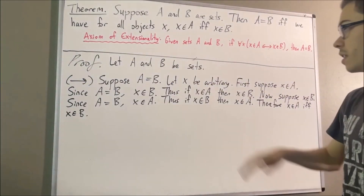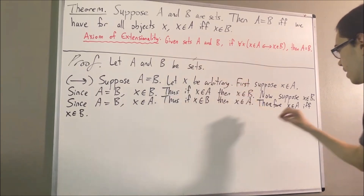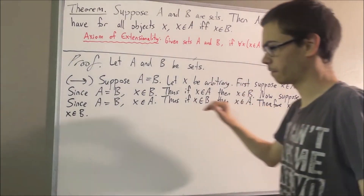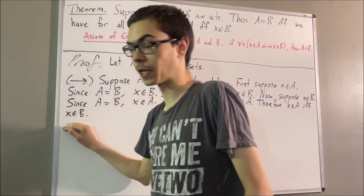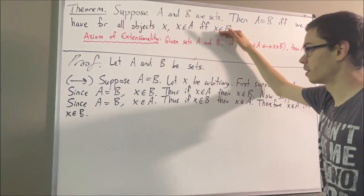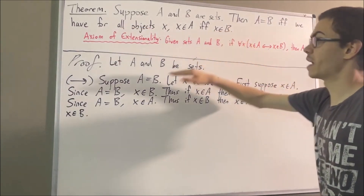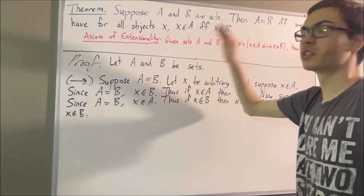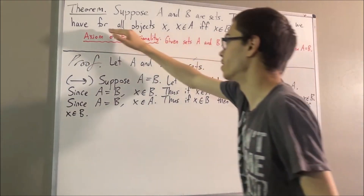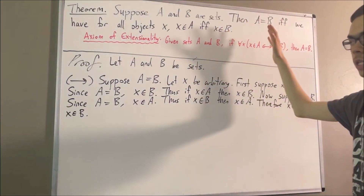And since X was arbitrary, this means for all objects X, X is an element of A if and only if X is an element of B. So we have proven precisely that statement, starting with the assumption that A is equal to B. So really, we've proven the forward direction.